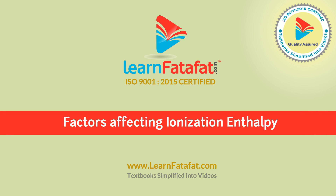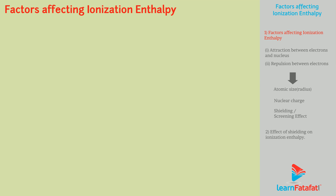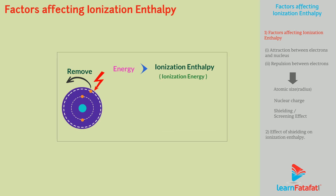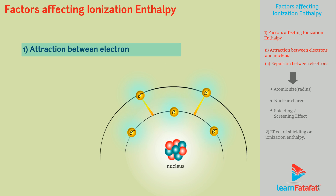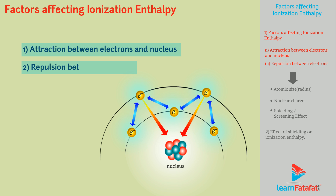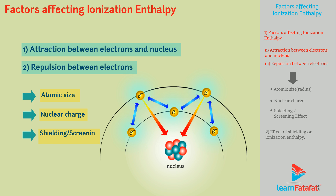Factors Affecting Ionization Enthalpy. In the previous video, we learnt about the concept of ionization enthalpy. Now we will see some factors on which ionization energy depends. These are: first, attraction between electrons and nucleus, and second, repulsion between electrons. We will discuss these on the basis of atomic size, nuclear charge, and shielding or screening effect.